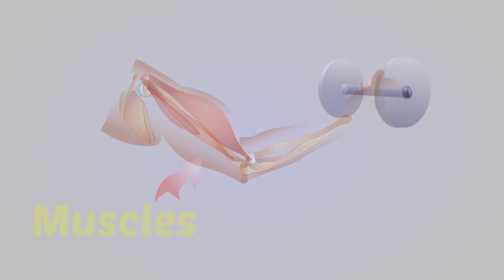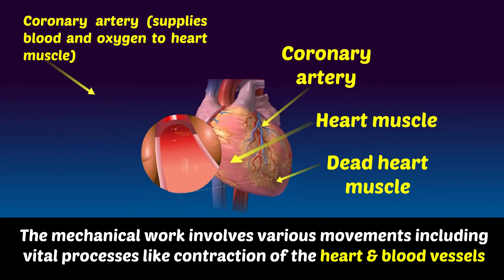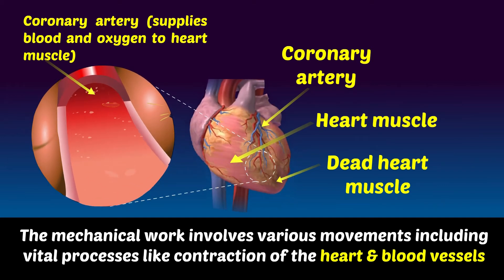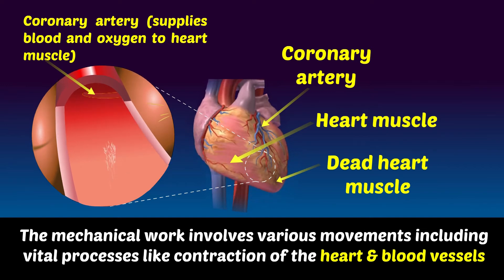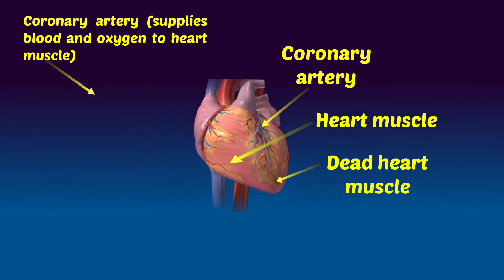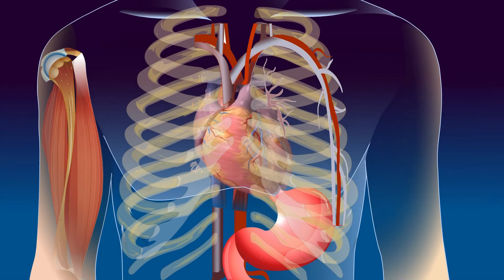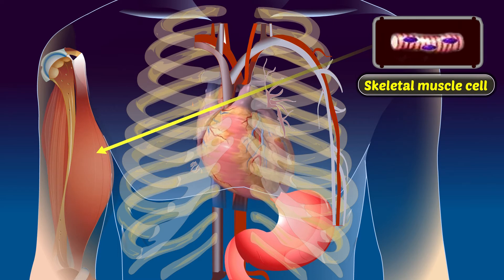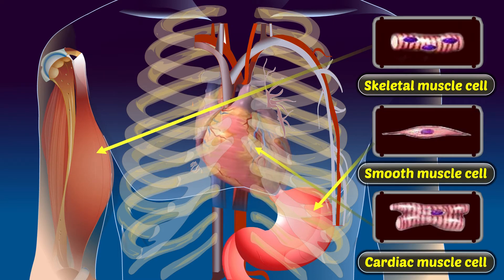The mechanical work involves various movements including vital processes like contraction of the heart and blood vessels. Approximately 40% of our body is made of skeletal muscles and almost 10% is made up of smooth and cardiac muscles.